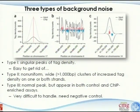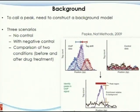The point here is that people have studied — and this study is based on the 2007 Science paper, the first ChIP-seq experiment — and derived several different types of background noise. To call a peak, we need to construct a background model. You can see the real ChIP-enriched signals with a peak, and the background signals alongside. How do you estimate the background signal? There are three different scenarios.